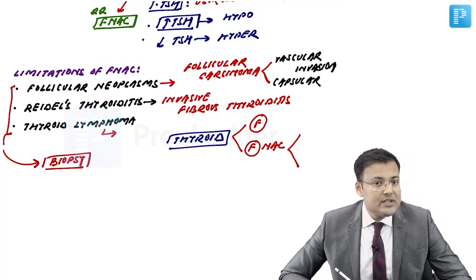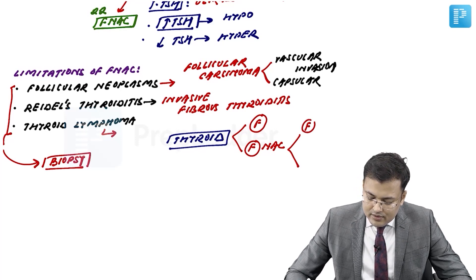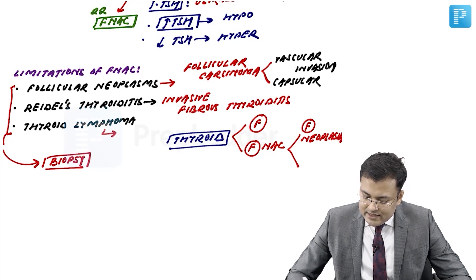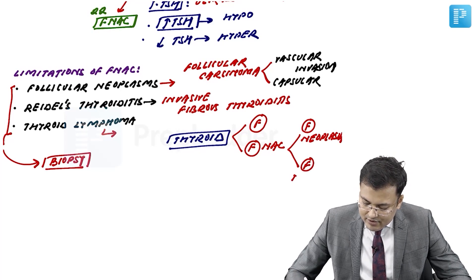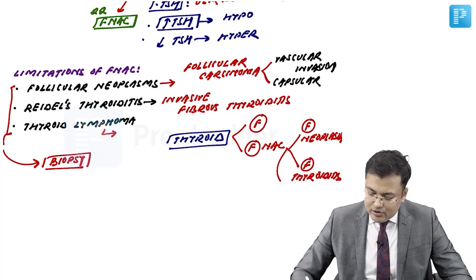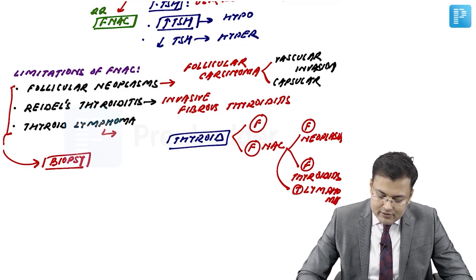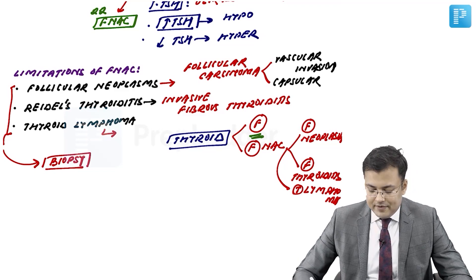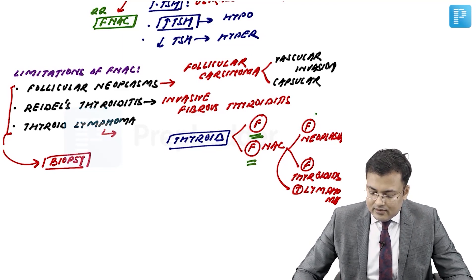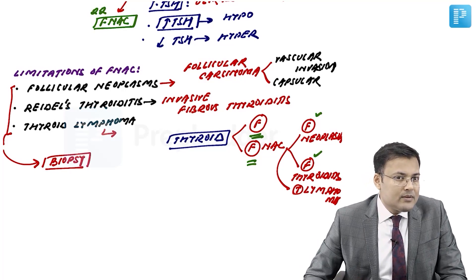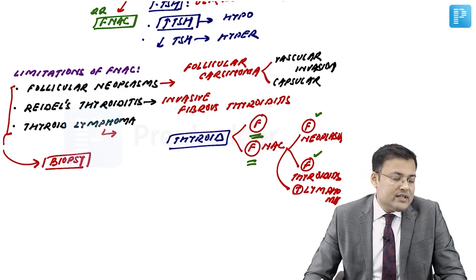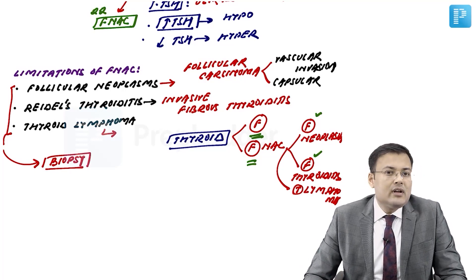You can remember using the letter F: more common in females, generally diagnosed on FNAC. The limitations of FNAC are: follicular neoplasia, fibrous thyroiditis (Riedel's thyroiditis), and thyroid lymphoma.